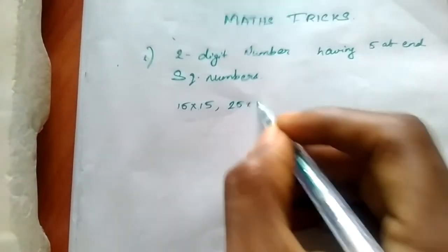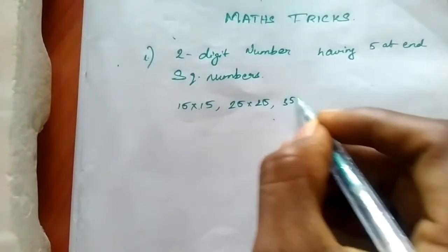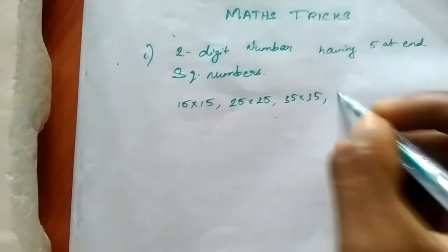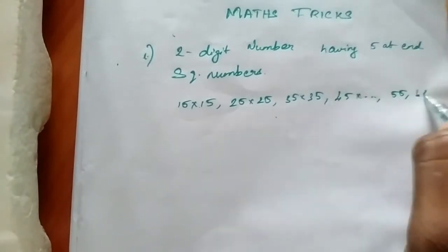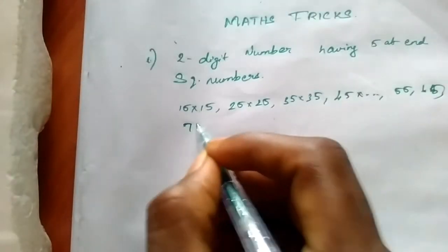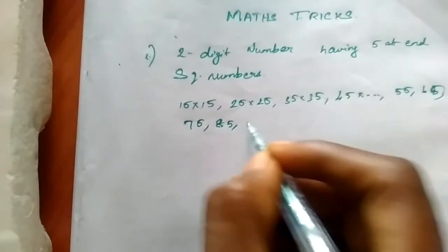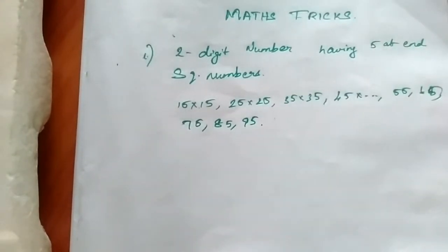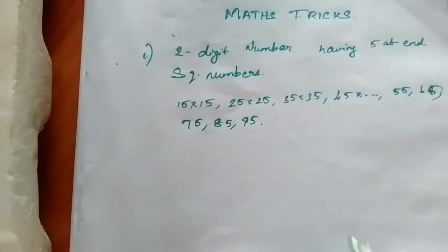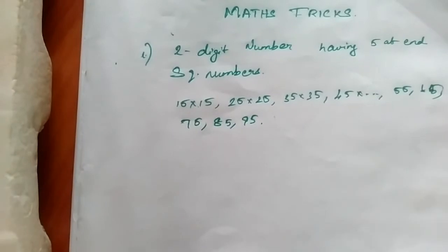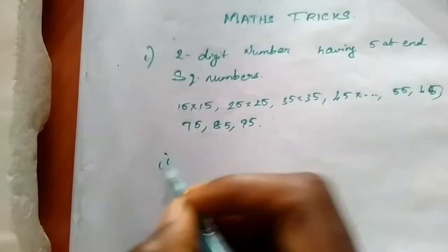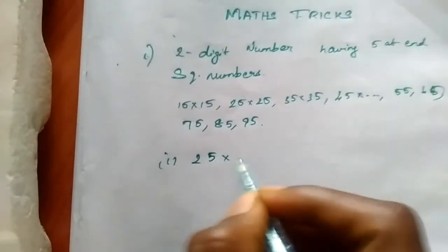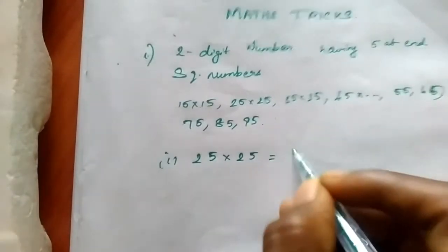25 x 25, 35 x 35, 45 x 55, 65, 75, 85, 95 — ok? Now, the answer for all these numbers is easy. For example, 25 x 25 is equal to 625.